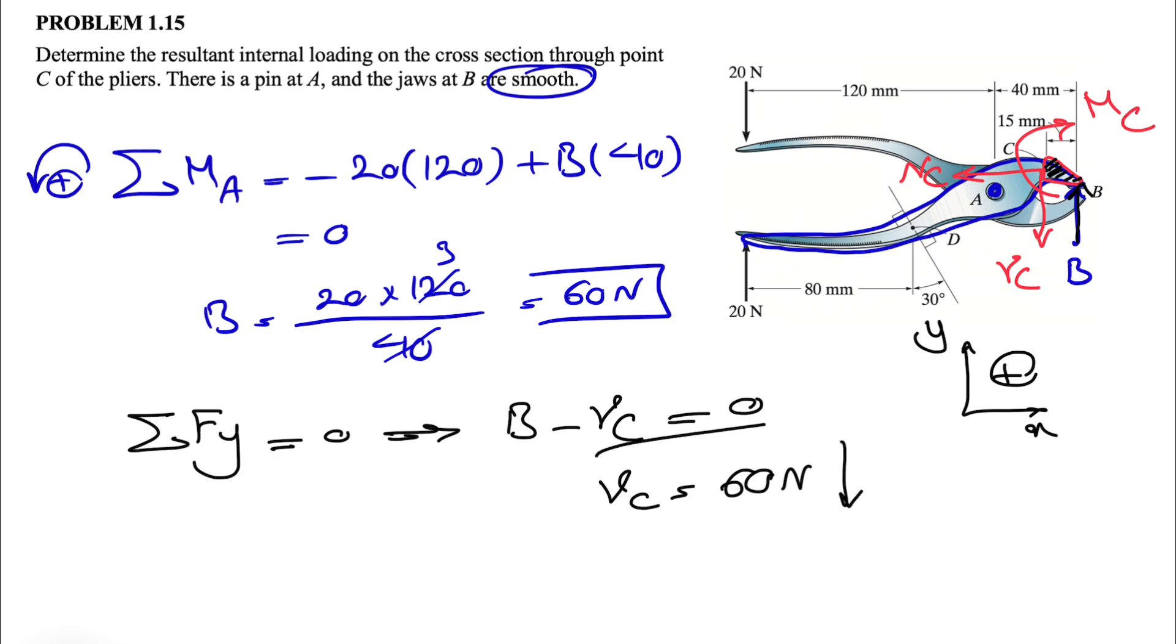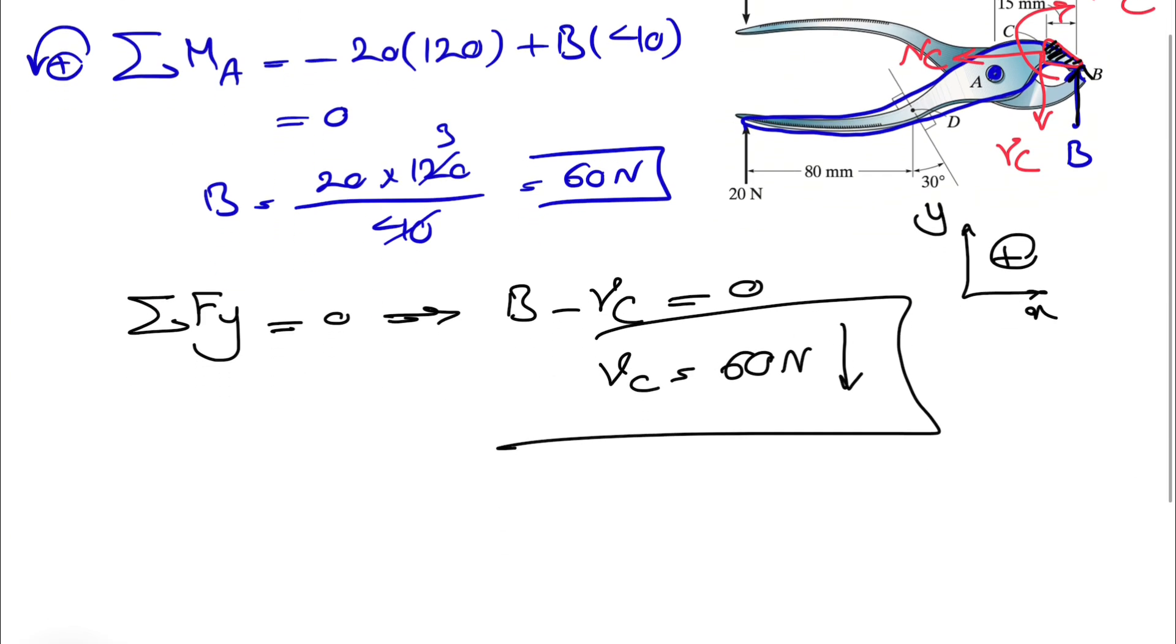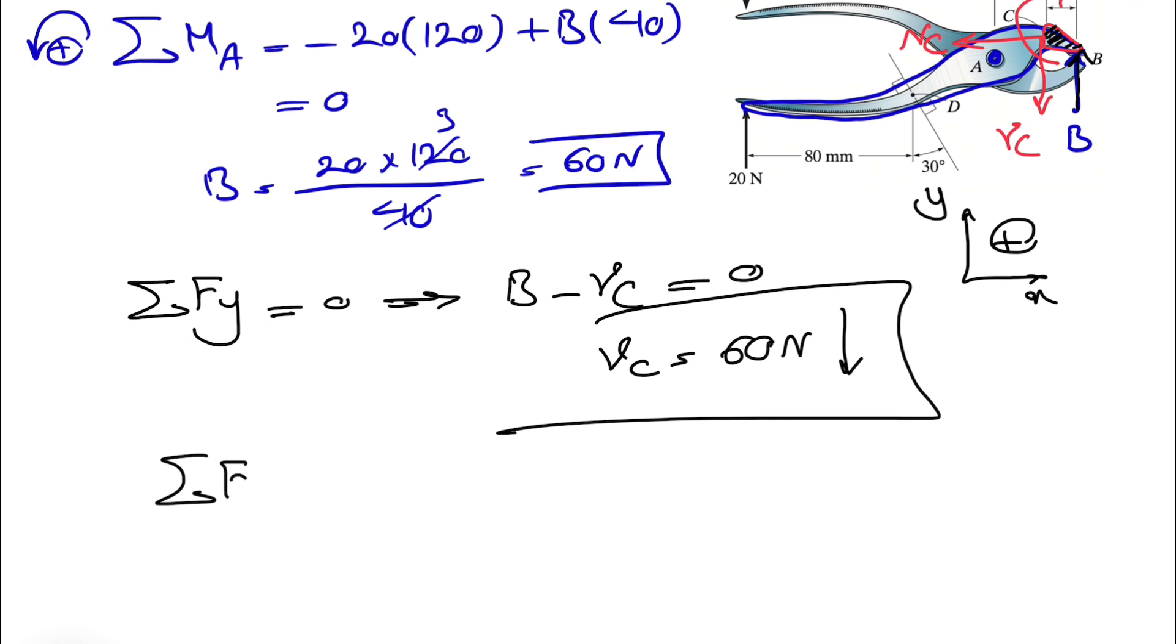Going to go with sum of all forces in X direction in order to find our NC. So the only thing that we have in X direction is NC, meaning that one is zero, so nothing for that.